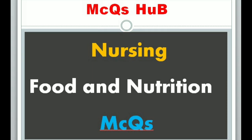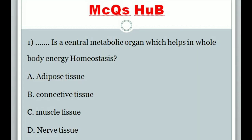Food and nutrition. Question 1: Which is a central metabolic organ that helps in whole body energy homeostasis? Answer: Adipose tissue.